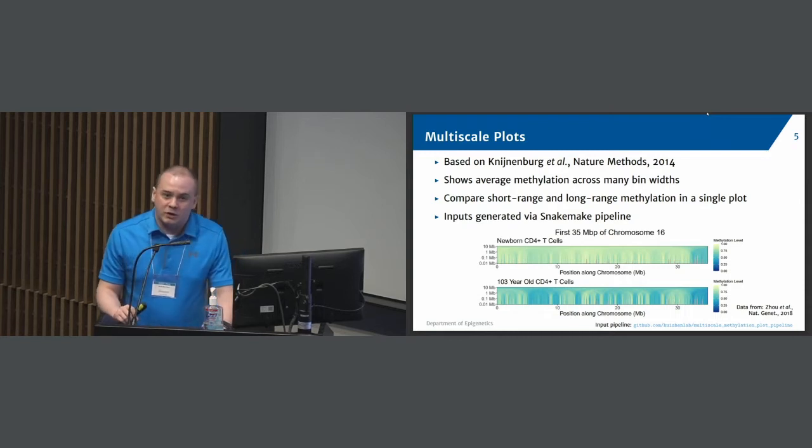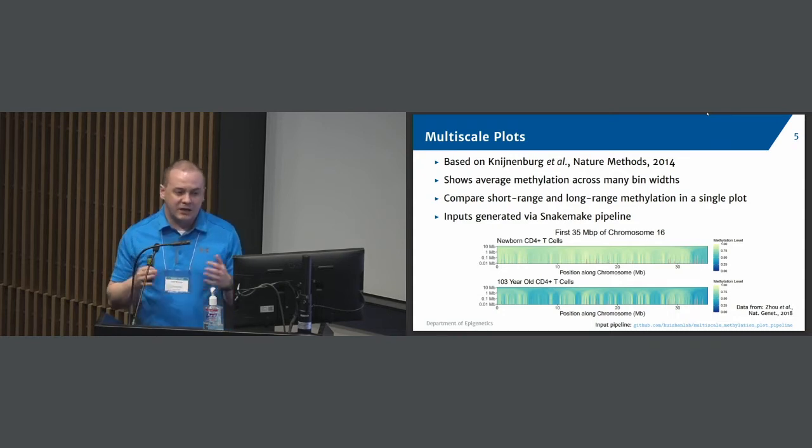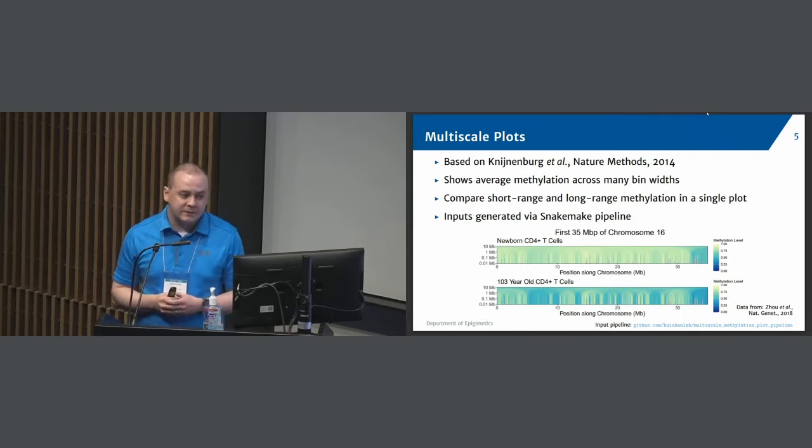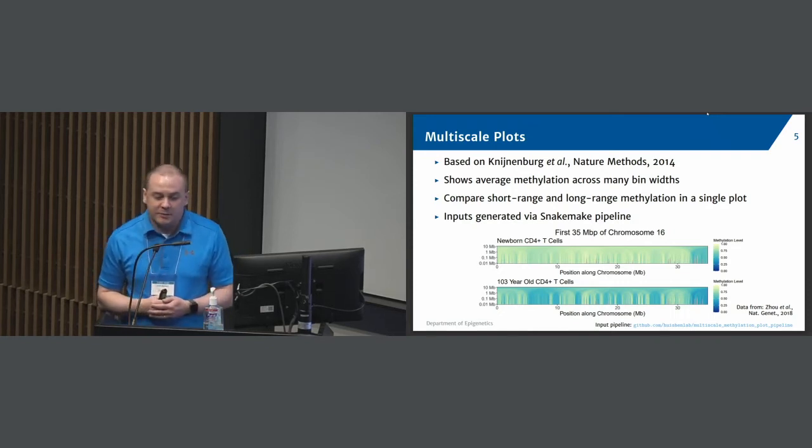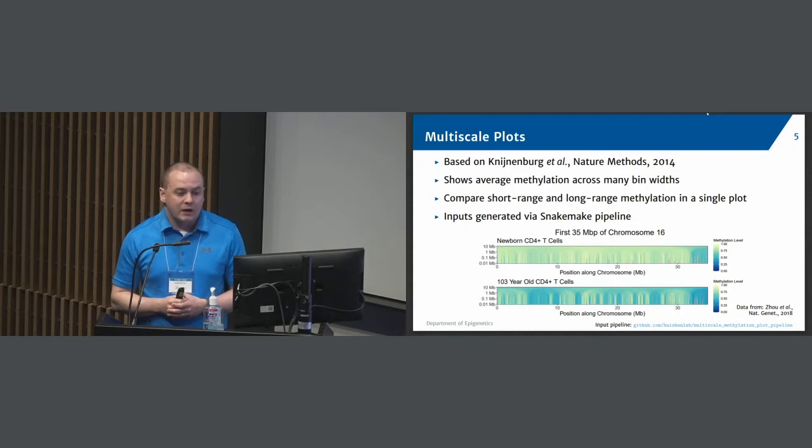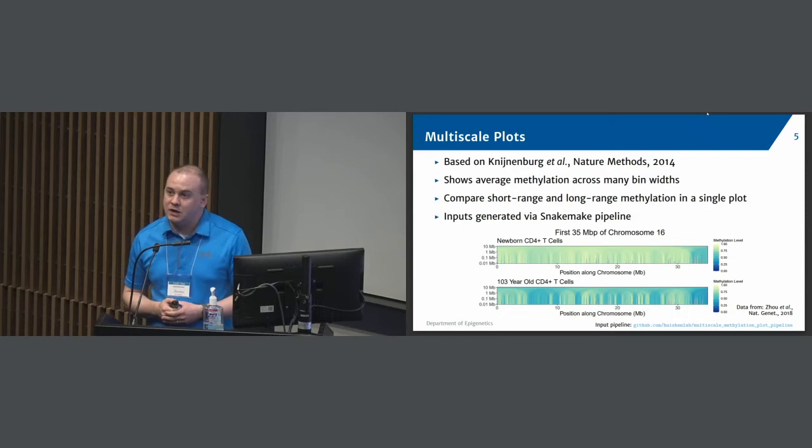The next type of plot that we have are what we call multi-scale plots, and these are based on Kniedenberg et al. in Nature Methods of 2014. And what this does is it shows the average methylation values across many bin widths. So you can start with small bins and then compare where you have short-range methylation interactions to long-range methylation. And so you can get this in a single view here using these plots. These inputs are generated via SnakeMate pipeline, which we have available on GitHub. And so you're able to do comparisons across samples this way, as is shown here in this example of a newborn set of cells in a 103-year-old set of cells.